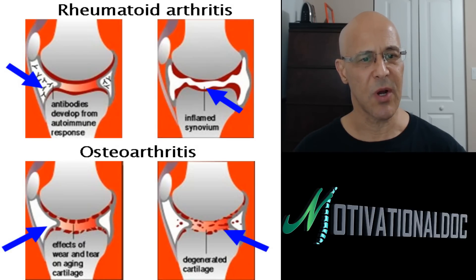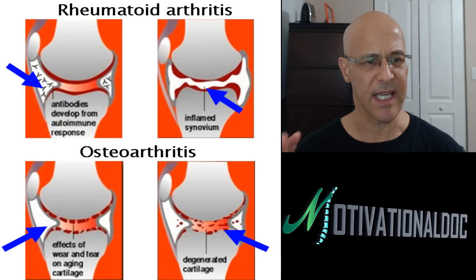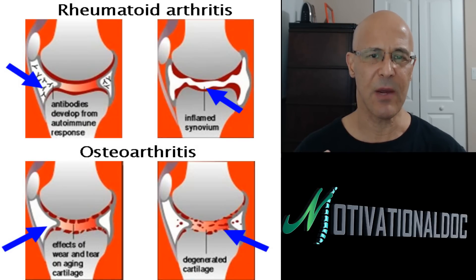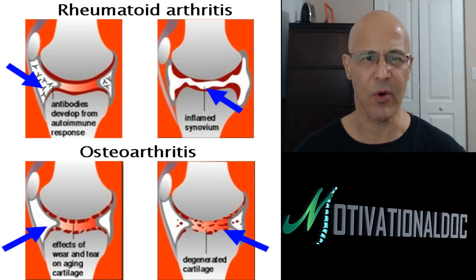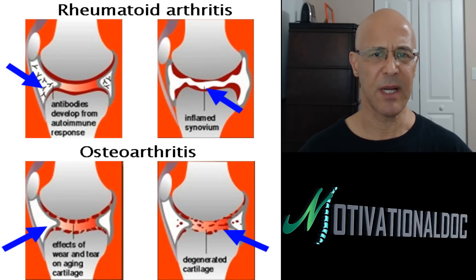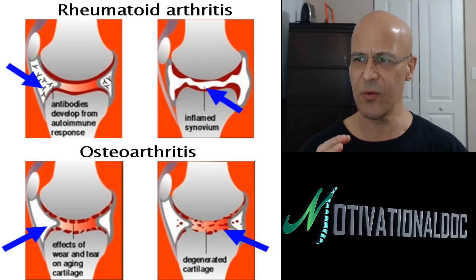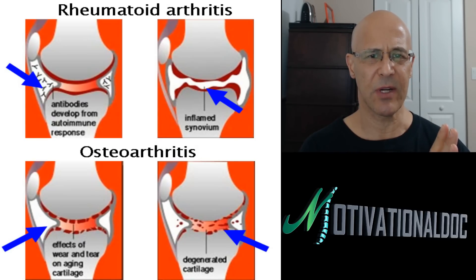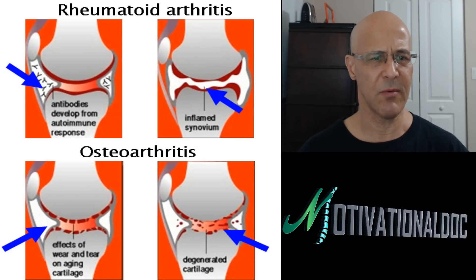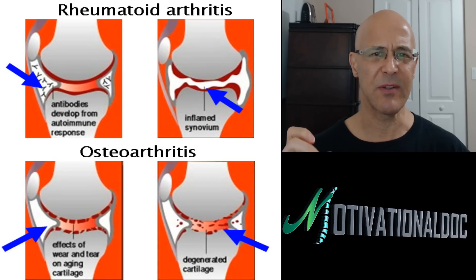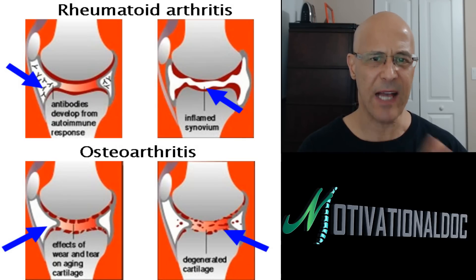Rheumatoid arthritis is an autoimmune condition — an immune system that's attacking the joints as if they were foreign tissue. I'm going to tell you some really good strategic things that we can do to knock this condition: try to build up the immune system on the autoimmune side and reduce inflammation, weight bearing, and stress in the joints on the osteo part.